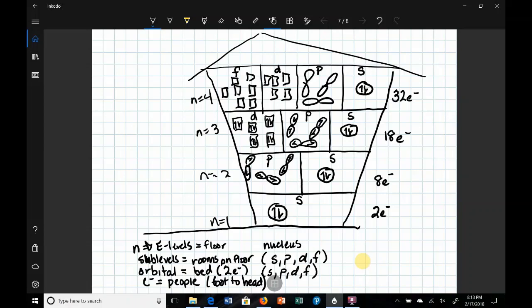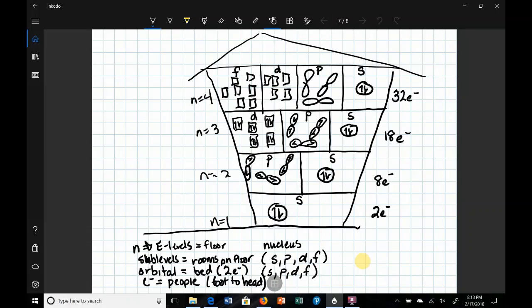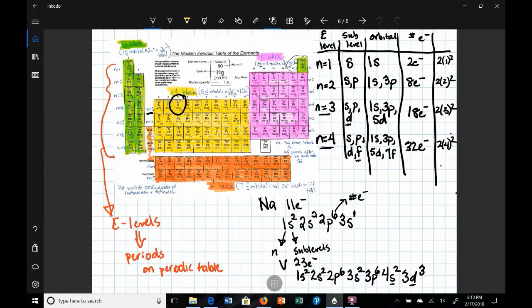Let's do some more practice. Let's do one of these elements over here. Let's take a look at selenium. Notice that selenium, we'll start over here. Selenium has 34 electrons, so we can fill up the electrons based on the periodic table.